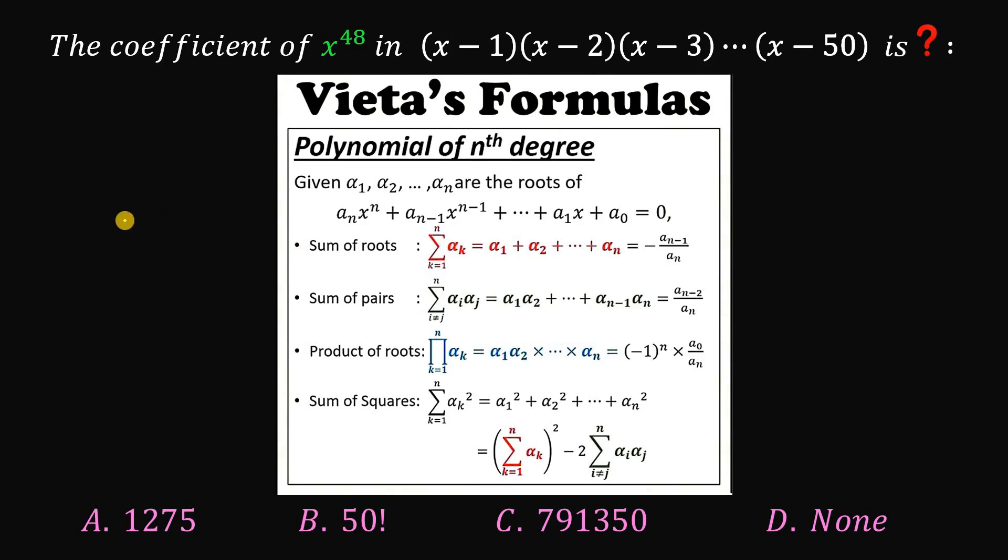Then we know that the sum of the roots using Vieta's formula, the sum of the roots must be equivalent to the negative of A sub n minus 1 all over A sub n. And the sum of pairs, the roots, is equivalent to A sub n minus 2 all over A sub n.